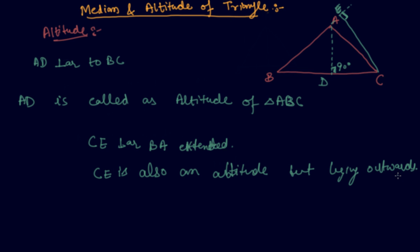There can be at most three altitudes to a triangle. The third altitude would be from point B. So maximum you can draw three altitudes and three medians of a triangle. I hope you are pretty clear on the topic of median and altitude.